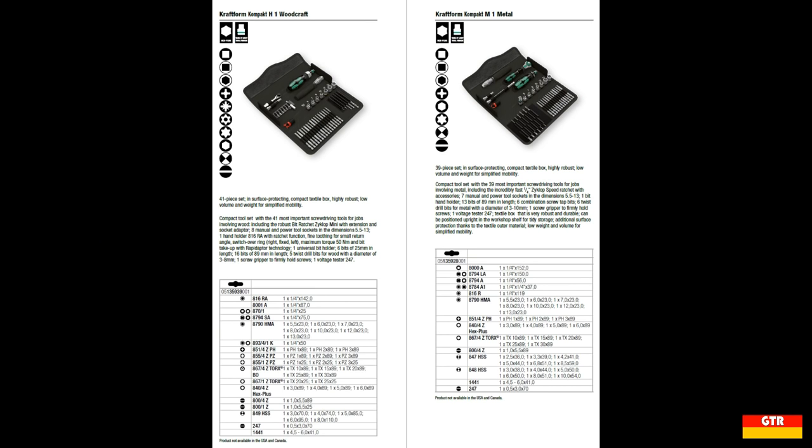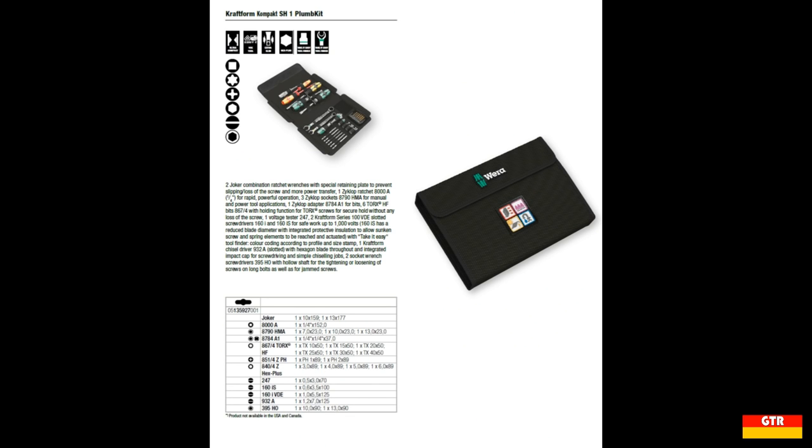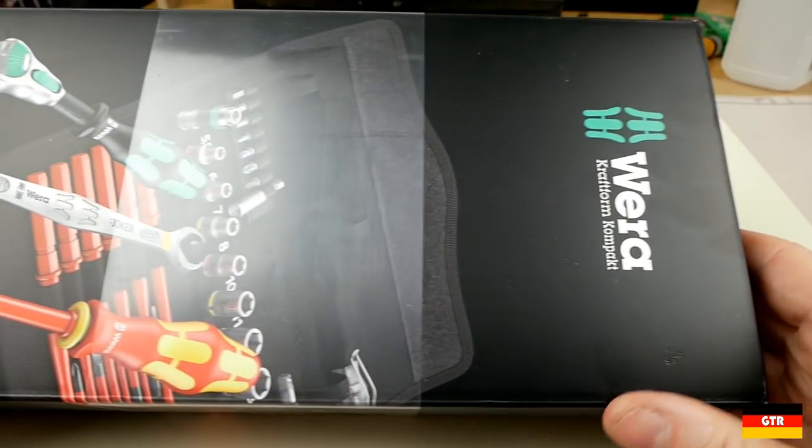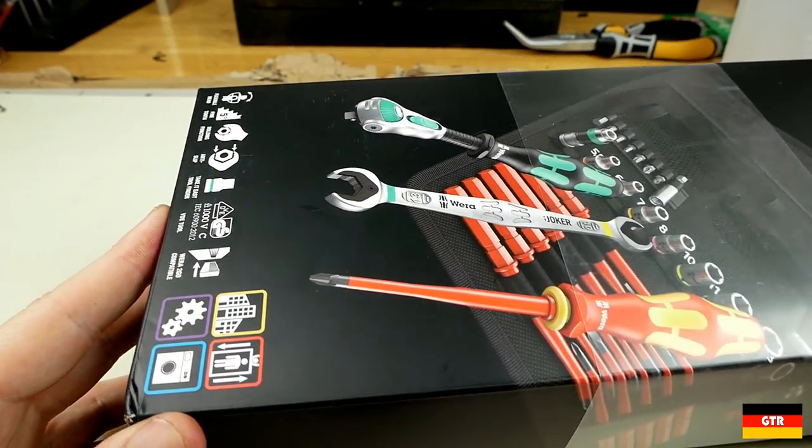It is not just this set that is listed this way. Actually all of the Craftform Compact user-specific sets have this note, including the H1 Woodcraft, M1 Metal, and SH1 Plum Kit. I believe the reason for this is because each of these kits includes the 247 voltage tester, which is really the only Vera product that is marked with this in the catalog. I'll get into why this particular product would be pretty useless in certain parts of the world.